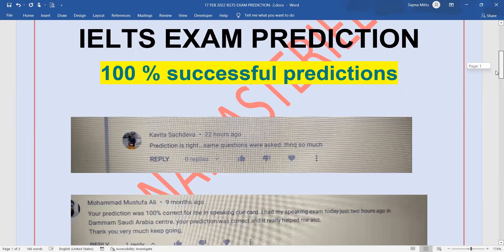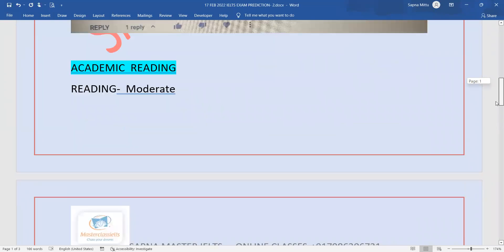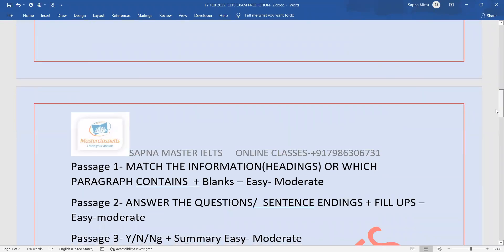For Academic Reading, the reading is going to be moderate. Passage 1 can be in the form of match the information, whether it could be headings or which paragraph contains the following information—anything can come. Plus blanks are likely to appear. The level will be easy to moderate.